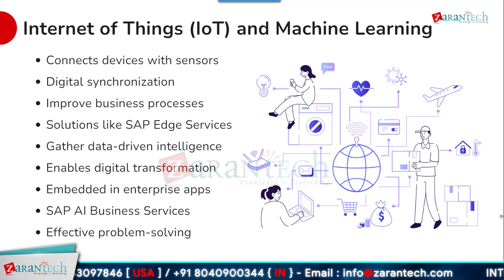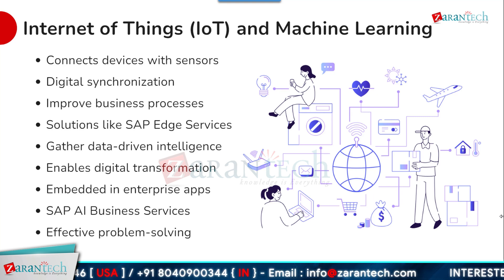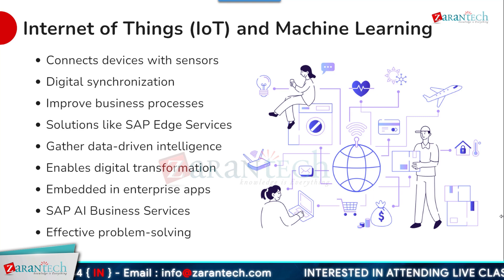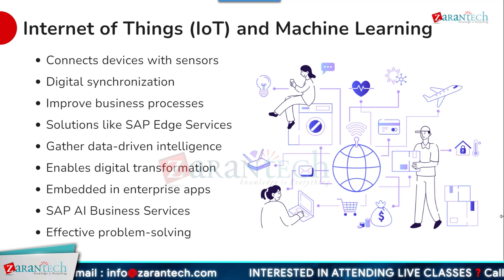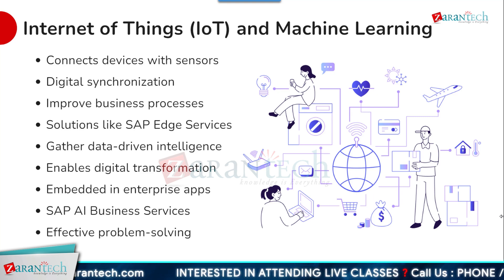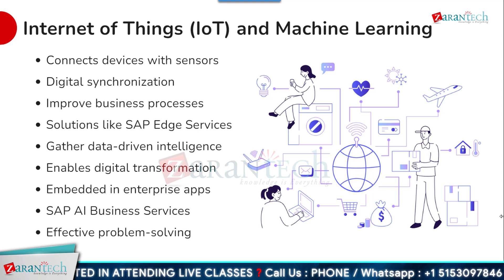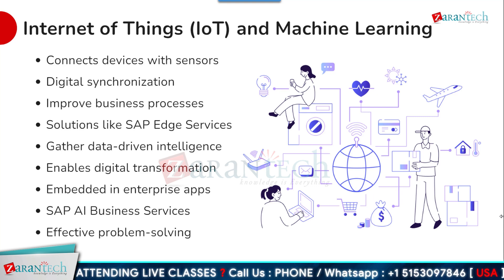SAP BTP enables organizations to connect devices with sensors, creating a digital synchronization that improves business processes. Solutions like SAP Edge Services help organizations gather data-driven intelligence from these connected devices. SAP BTP enables digital transformation by embedding machine learning and artificial intelligence into enterprise applications. SAP AI Business Services provides powerful tools for effective problem solving.